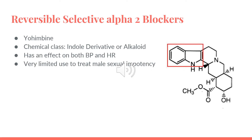Next, we have the reversible selective alpha-2 blockers. We have yohimbine. Its chemical class is indole derivative or alkaloid. It has an effect on both blood pressure and heart rate, and it has a variety of methods used to treat male sexual impotency. Yohimbine blocks the negative feedback, which would increase norepinephrine in the synapse and increase blood pressure. It also blocks alpha-2 on the presynaptic, blocking the negative feedback, so we have more norepinephrine release, more norepinephrine binding on the beta-1 receptor of the heart. So it increases both heart rate and blood pressure.